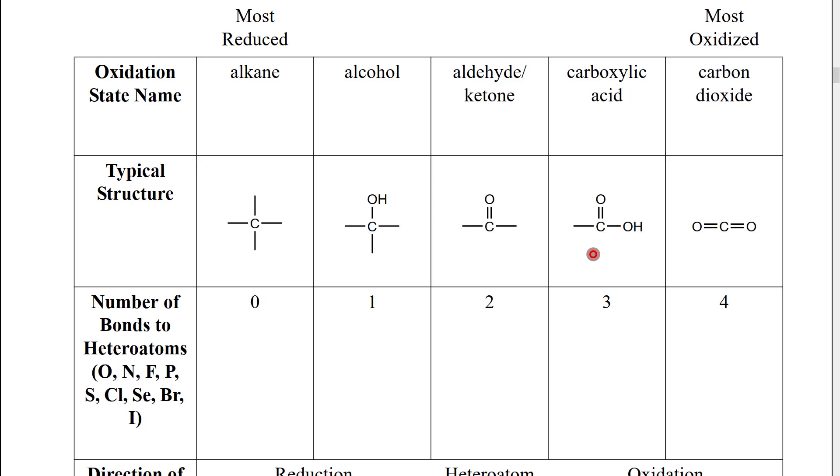We can remove another group and put another hydroxyl group, we would have three bonds. And finally, we could remove the final non heteroatom group and make carbon dioxide, which has four bonds. What we see when we calculate oxidation numbers is that the oxidation number, the oxidation state increases as we move across this series.